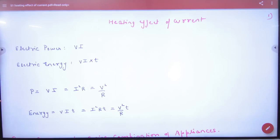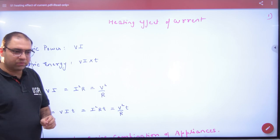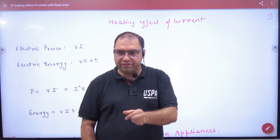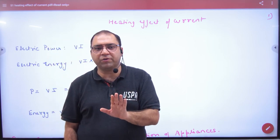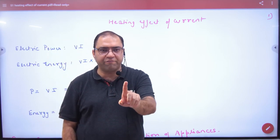In the heating effect of current sheet number 51, it tells you that if you have a battery, V-volt battery, which is the current I, then what is the value of power? V into I. This is the first formula.